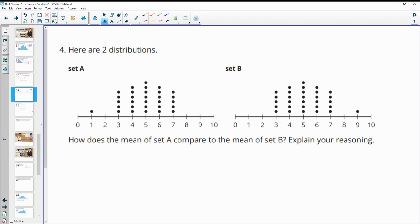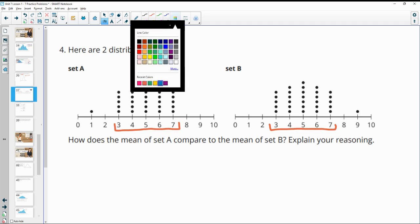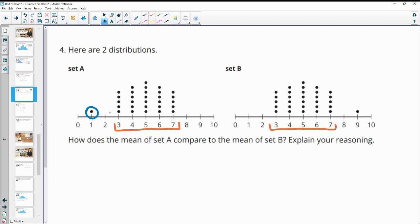Number four. Here are two distributions. How does the mean of set A compare to the mean of set B and explain your reasoning? When we look at this, you can see this middle set of the data looks to be exactly the same. We've got five dots with three, the same number of dots with four, five, six, seven, and so on. The only point that's different is the one and the nine.